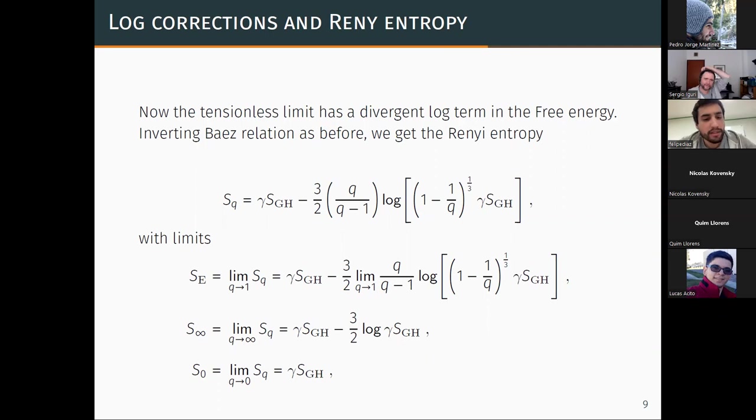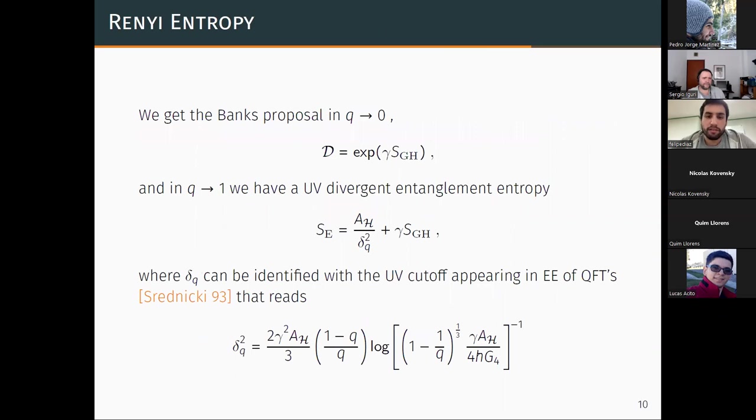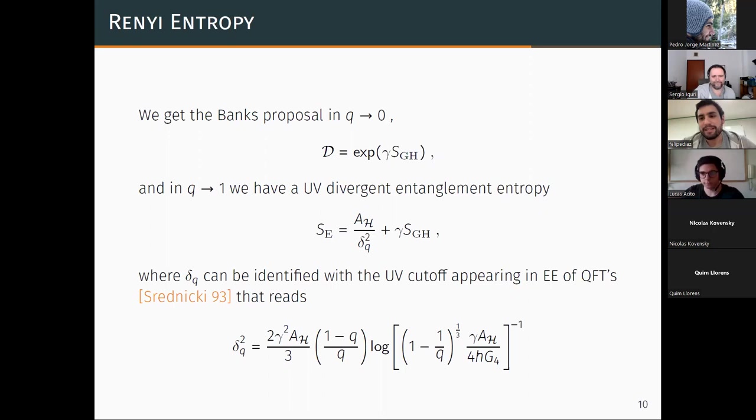This Renyi entropy now has a q-dependence and the three important limits are: the entanglement limit which now is divergent, and when you take q to zero that gives you the dimensionality of the reduced density matrix. This is a constant and it's actually the Banks proposal, so the Banks proposal survives even when you consider the first quantum corrections to the horizon entropy. Moreover, the entanglement entropy now acquires a UV divergent term, which is how a universal UV entanglement should behave. Thank you very much.